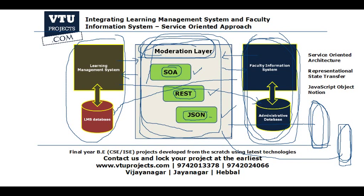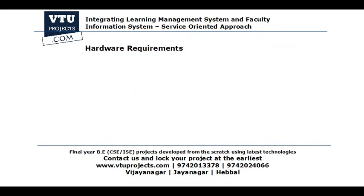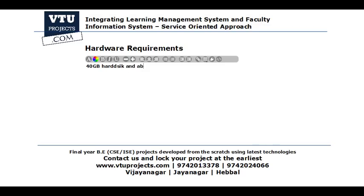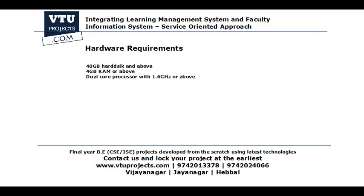Now let us go to the hardware and software requirements. For hardware, we don't need any specialized hardware. All we need is a single machine with a 40 GB hard disk or above, 2 GB to 4 GB RAM or above, and a dual-core processor with 1.6 GHz or above. These are the minimum hardware requirements for our project.